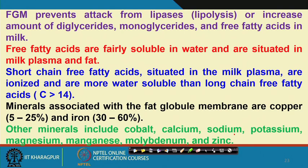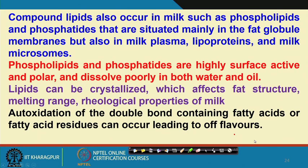Short chain fatty acids situated in the milk plasma are ionized and are more water soluble than long chain free fatty acids, where long chain means carbon number greater than 14. Minerals associated with the fat globule membrane include copper at generally 5 to 25 percent, iron at 30 to 60 percent, and other minerals including cobalt, calcium, sodium, potassium, magnesium, manganese, molybdenum, and zinc.